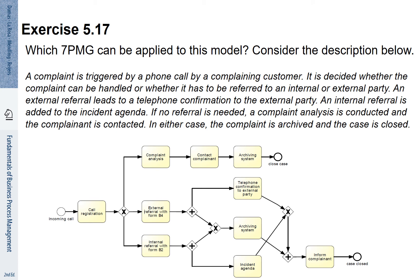Let's have a look at an exercise that we have in our book in relation to the seven process modeling guidelines. It is about a complaint. A complaint is triggered by a phone call by a complaining customer. It is decided whether the complaint can be handled or whether it has to be referred to an internal or external party. An external referral leads to a telephone confirmation to the external party. An internal referral is added to the incident agenda. If no referral is needed, a complaint analysis is conducted and the complainant is contacted. In either case, the complaint is archived and the case is closed.